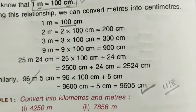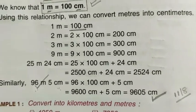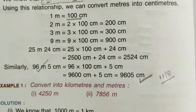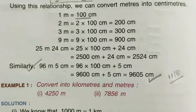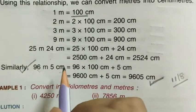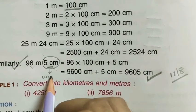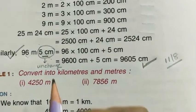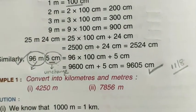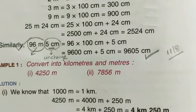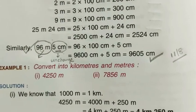Now look at another example. Here both terms are present: meters and centimeters. We need to convert it into centimeters. The centimeter part will remain unchanged — no need to convert it again. Only the meter part will change. In this case, 96 meters needs to be converted into centimeters. To convert meters to centimeters, simply multiply by one hundred. So 96 into one hundred gives 9600 centimeters, then add the remaining 5 centimeters.